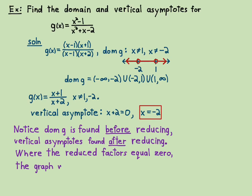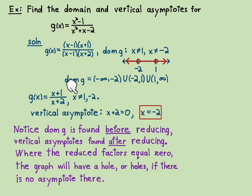So where the reduced factors equals 0, the graph will have a hole or holes if there is no asymptote there. So for this example up here, what I mean by the reduced factors is the x minus 1 over x minus 1. So that x not equal to 1, that will have a hole in the graph.